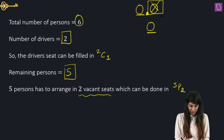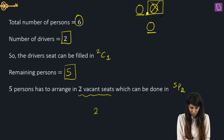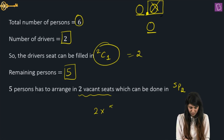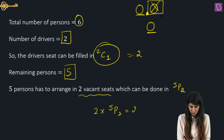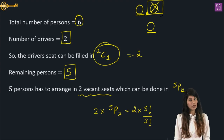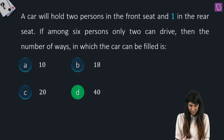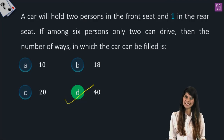So the final answer would be: 2C1 multiplied by 5P2. 2C1 is 2. So 2 multiply 5P2. If you solve this: 2 × 5!/3! = 2 × 20 = 40. That means option D is the correct answer.